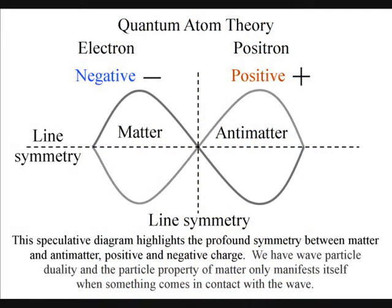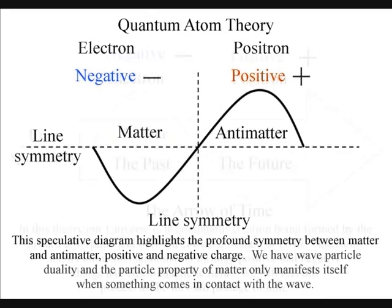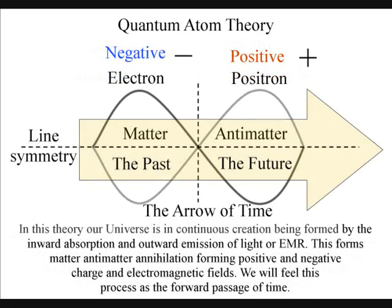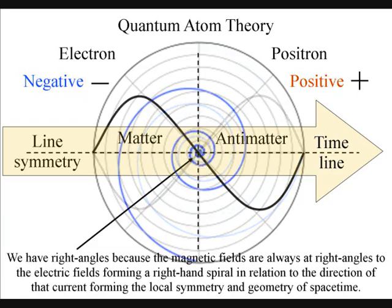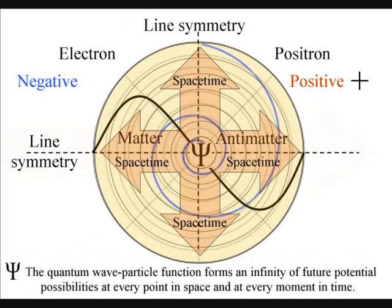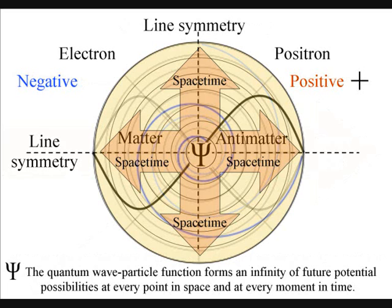This speculative diagram highlights the profound symmetry between matter and antimatter, positive and negative charge. It is the inward absorption and outward emission of light, or electromagnetic radiation, that forms matter-antimatter annihilation, forming positive and negative charge, that in turn forms electromagnetic fields.